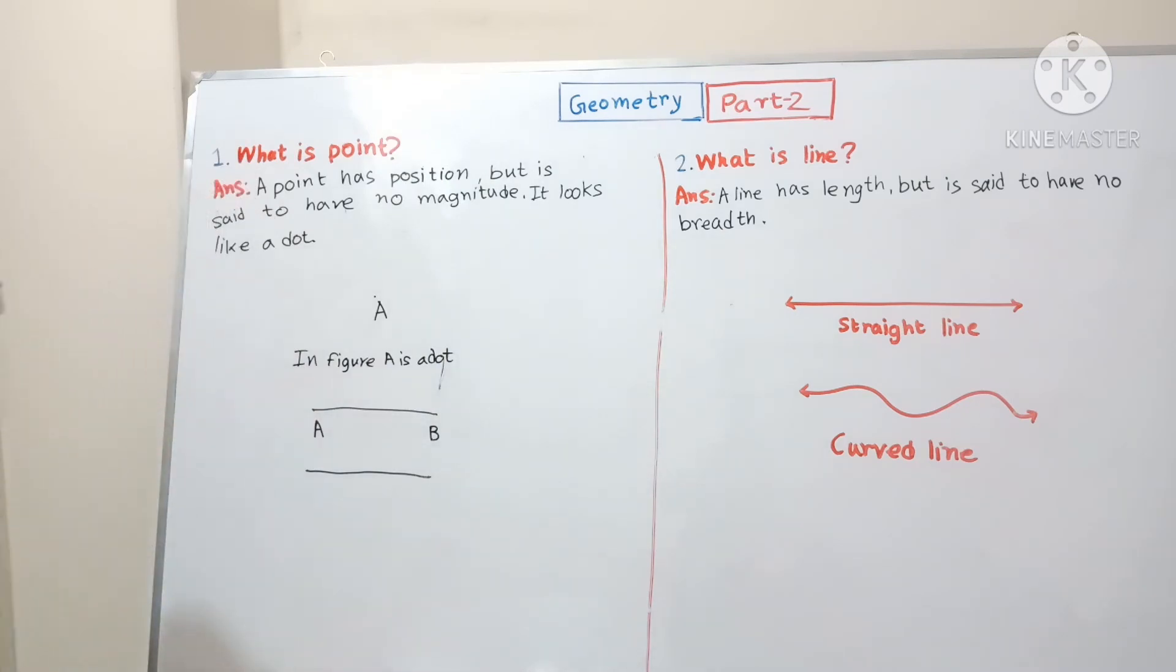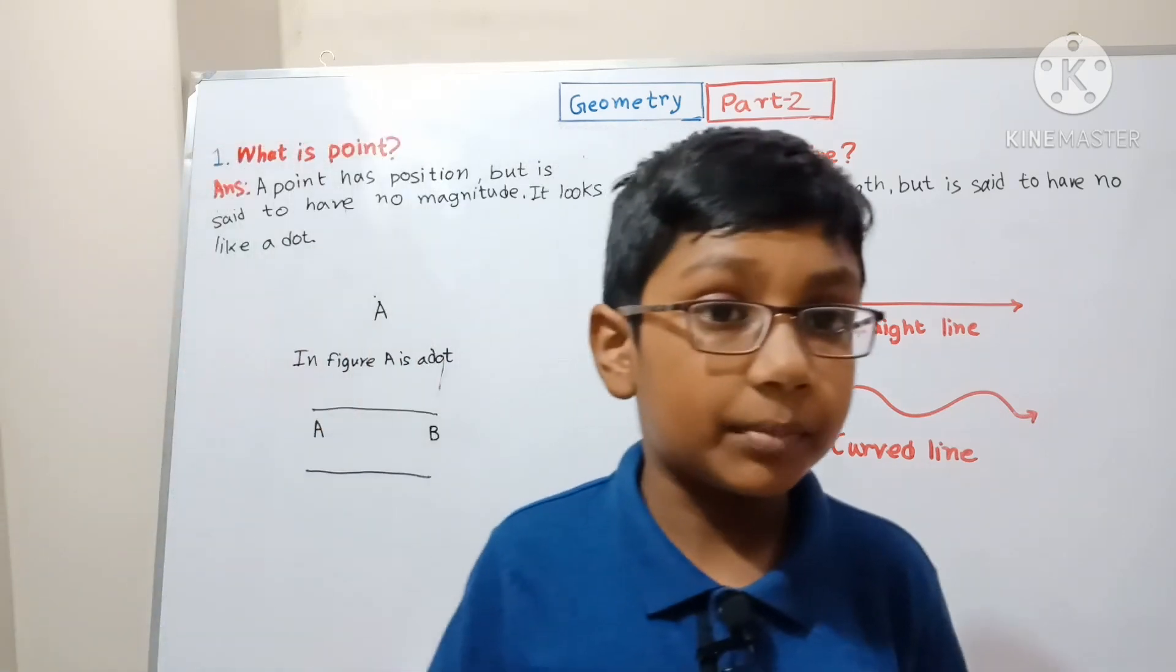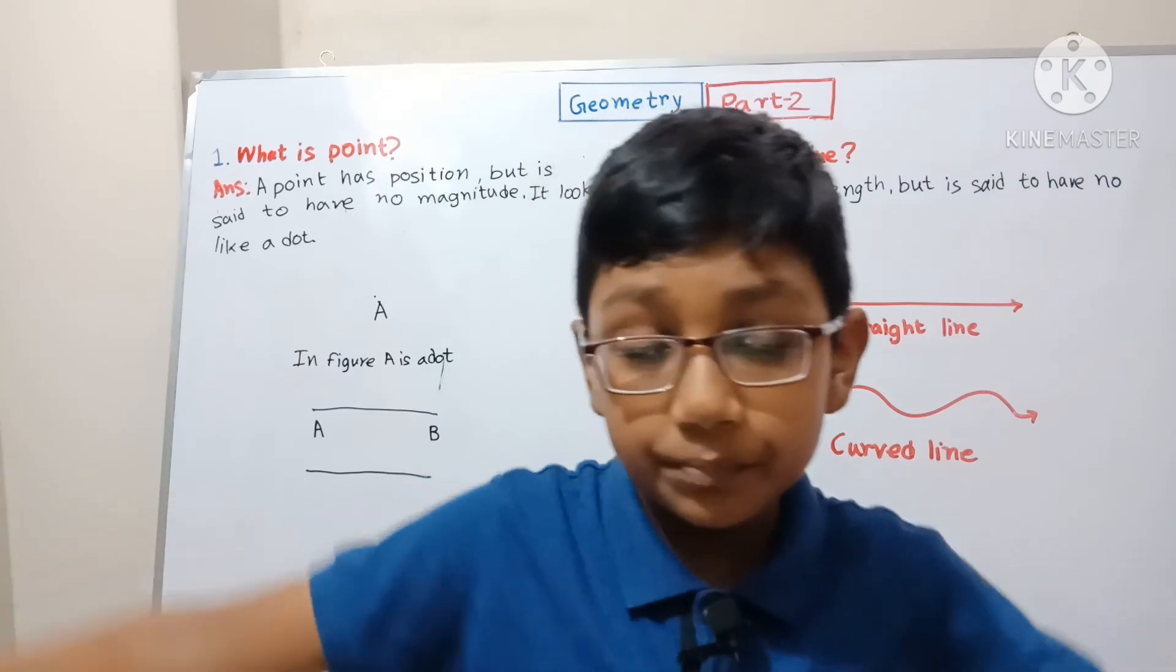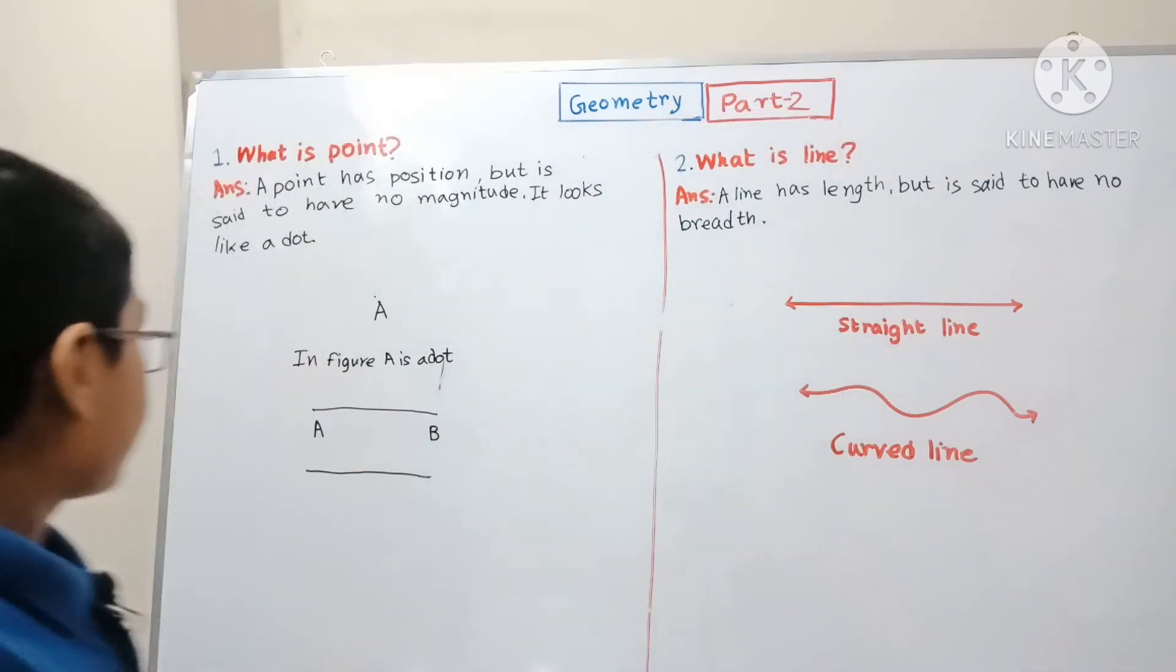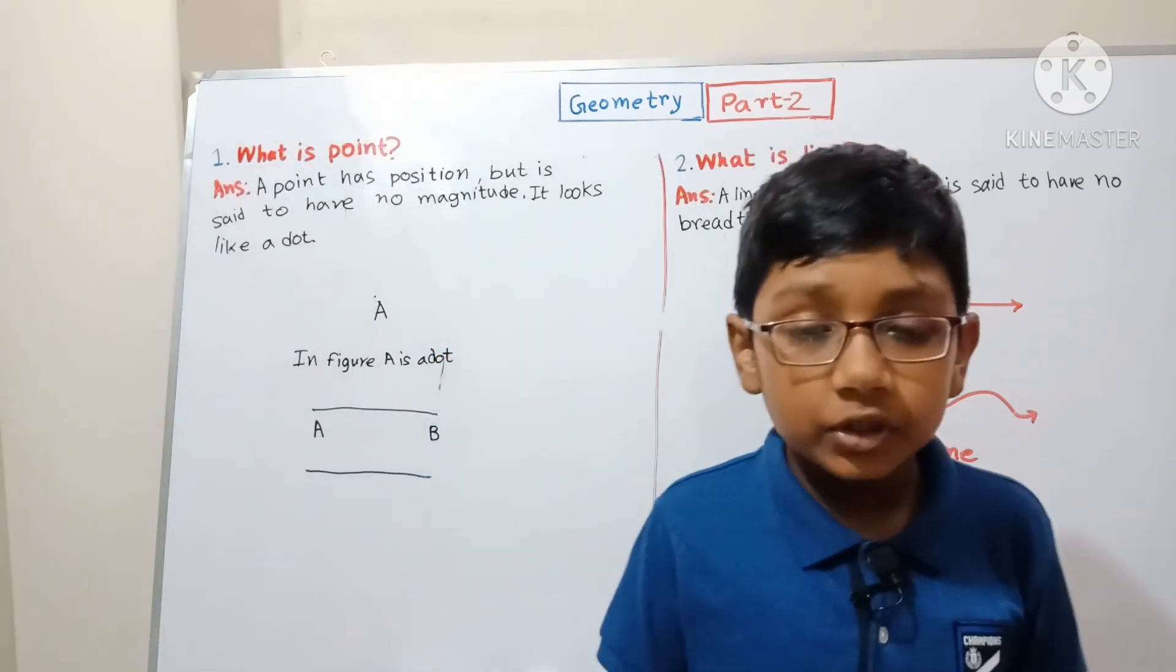Now what have we learned? Firstly, we learned what is a point. Then two points joined together that don't go one way or both ways forever is called a line segment.